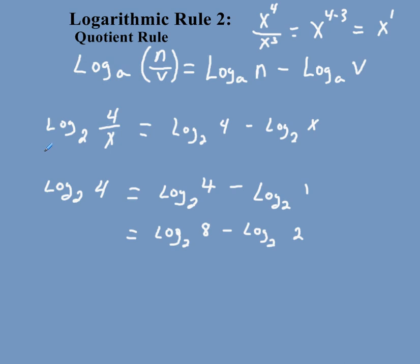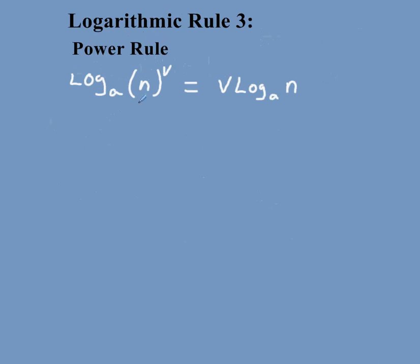Let's look at rule number 3. Now, this is called the power rule. Now, the power rule is listed right here, log a, n raised to a power. Now, you can rewrite that as taking that power and multiplying the entire log, just so you can see it, to the entire log. So, I'm multiplying that v by everything in the parentheses.